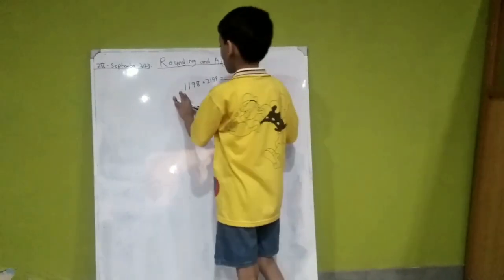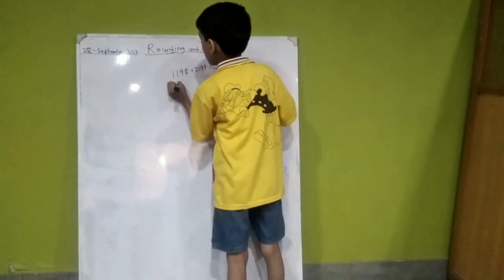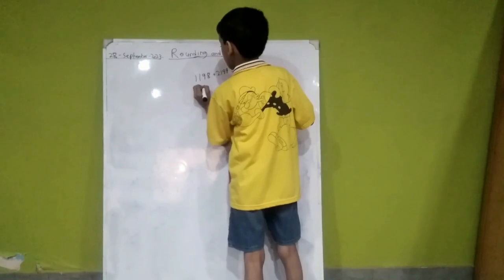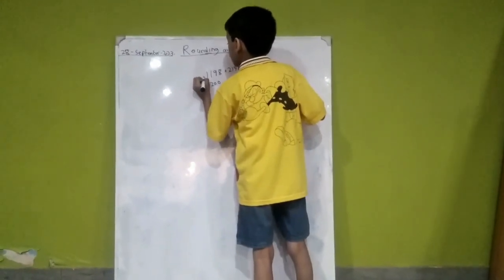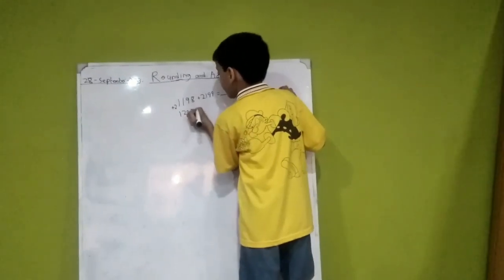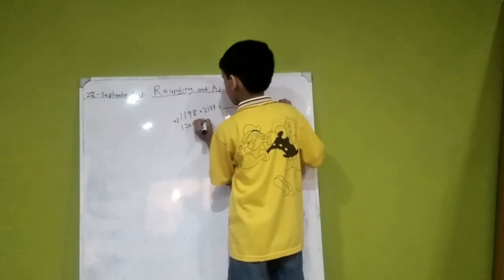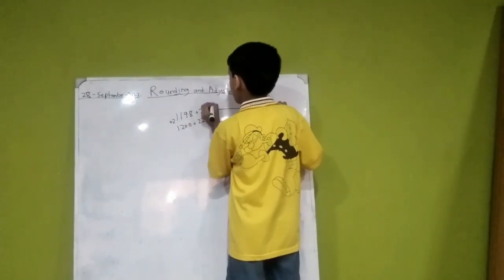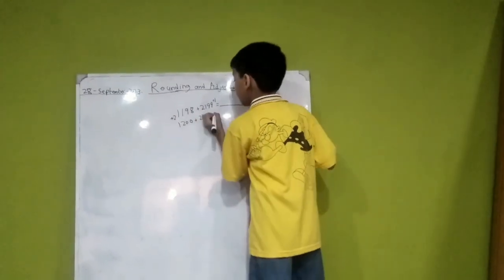Now we will round to the nearest ten. We have plus two here, and here we have plus one. Now we will plus four.